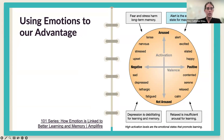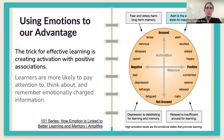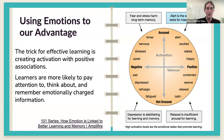The bottom line, reiterating what Hannah said, is that the trick for effective learning is creating activation with positive associations. Learners are more likely to pay attention to, think about, and remember emotionally charged information. Negative emotions can inhibit learning, but positive emotions are essential. This chart gives us a way to conceptualize emotions as they relate to learning. We can think of ourselves as activated or not activated on the y-axis, and emotions as positive or negative on the x-axis. The ideal area for learning is when we're activated in a positive way — alert is best, but also excited, elated, happy.